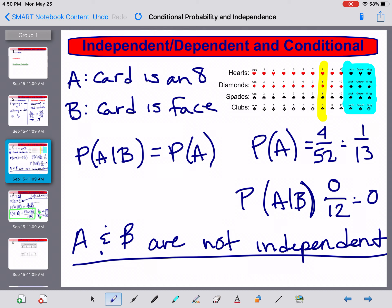Now we could also show that the other way. If we wanted to flip this around, instead of A given B, let's go B given A, and the probability of B. Well, the probability of B, the card is a face card, is 12 over 52, which would be 3 over 13.